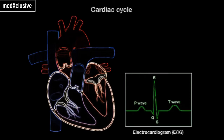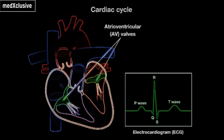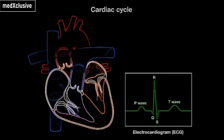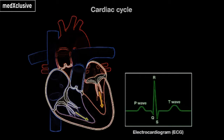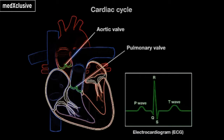At the beginning of the cardiac cycle, the atrioventricular, or AV, valves open. This allows blood to begin to flow into the ventricles from the atria. At the same time, the pulmonary and aortic valves are closed, preventing blood in the pulmonary trunk and aorta from entering the ventricles.